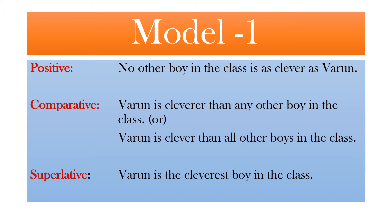Here in Model 1, the positive sentence is like this: 'No other boy in the class is as clever as Warren.' The comparative would be: 'Warren is cleverer than any other boy in the class,' or 'Warren is cleverer than all other boys in the class.' The superlative would be: 'Warren is the cleverest boy in the class.' We use positive degree for comparing one to one, comparative one to a second, and superlative one to all or one with the many.